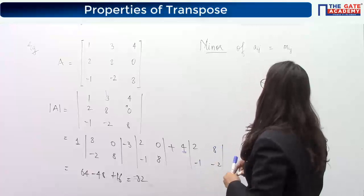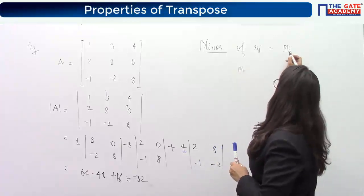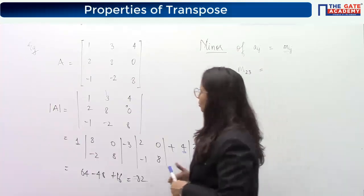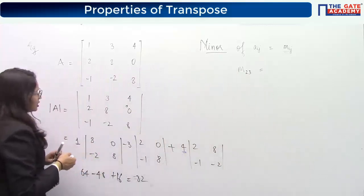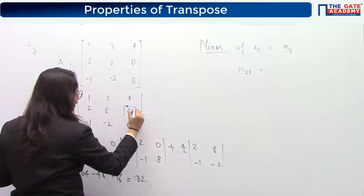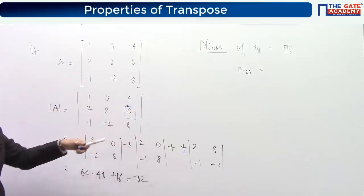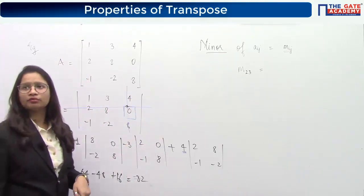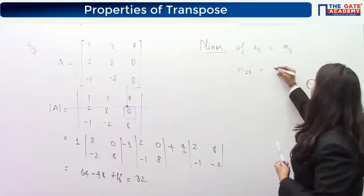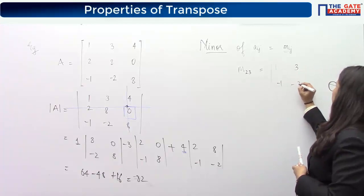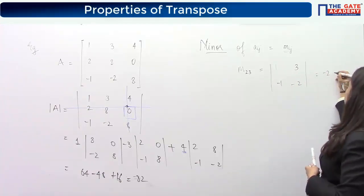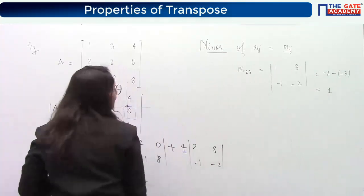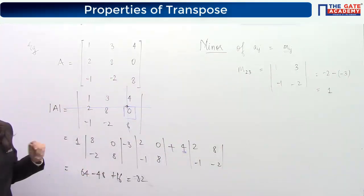The minor of any element M_ij is obtained by deleting the row and column in which the element is present and taking the determinant of the remaining quantities. For example, minor of element at position (2,3) — which is the element in the second row, third column — you delete that row and column, leaving a 2×2 matrix with elements 1, 3, minus 1, minus 2. The determinant gives minus 2 minus (minus 3) equals 1.